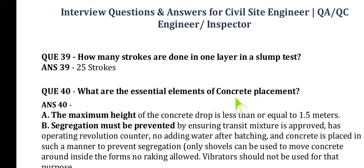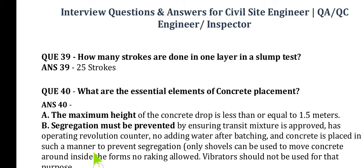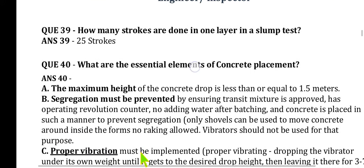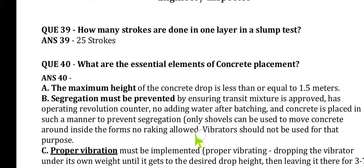Question 40: What are the essential elements of concrete placement? A) The maximum height of concrete drop is less than or equal to 1.5 meters. B) Segregation must be prevented by ensuring a transit mixer is approved, has a revolution counter, no water is added after batching, and concrete is placed in a manner to prevent segregation. Only shovels can be used to move concrete around inside formwork — a vibrator should not be used for that purpose.